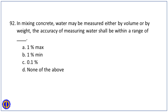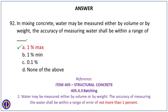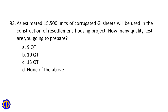Question 92. In mixing concrete, water may be measured either by volume or by weight. The accuracy of measuring water shall be within a range of: A. 1% max. B. 1% min. C. 0.1%. D. None of the above. Answer: A. 1% max. Reference: Item 405, Structural Concrete, 405.4.3 Batching — the accuracy of measuring water shall be within a range of error of not more than 1%.